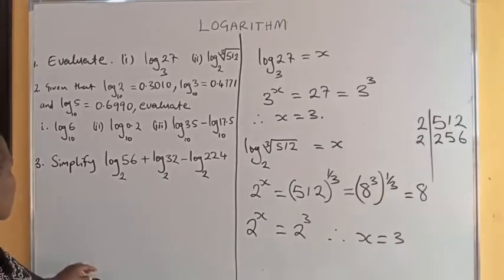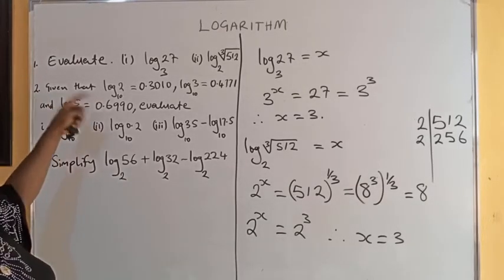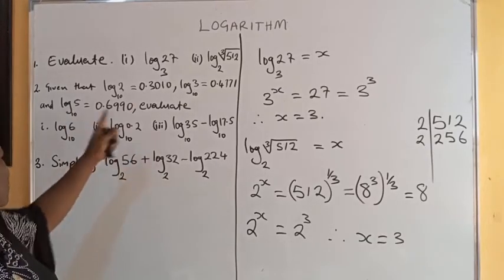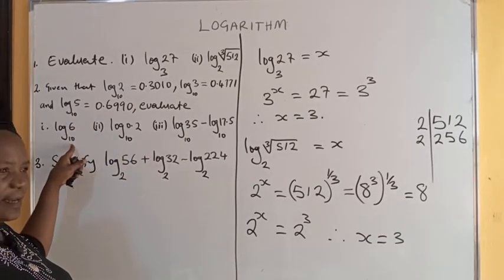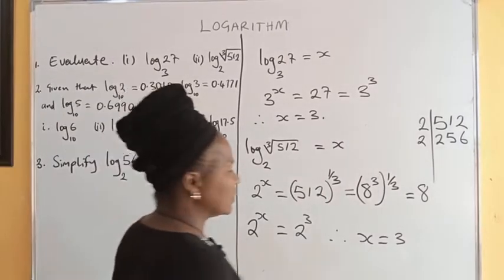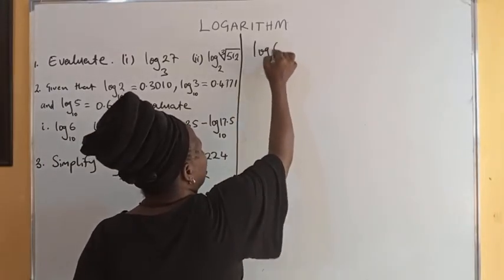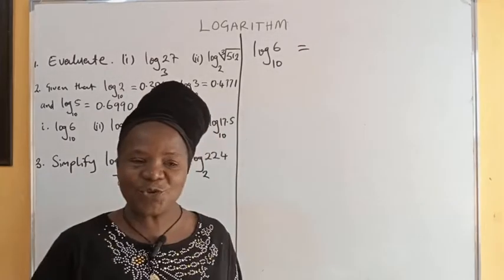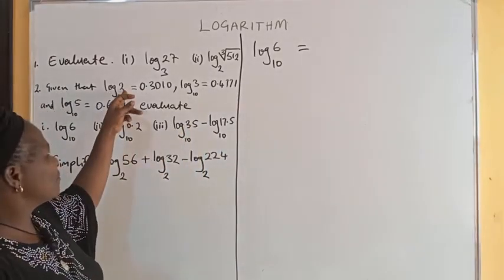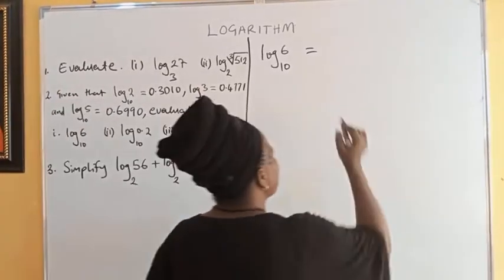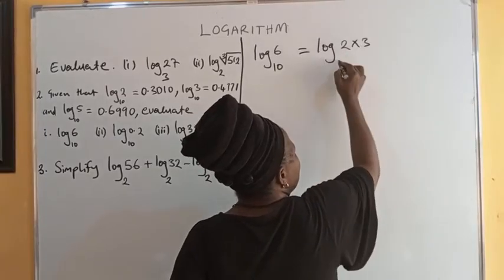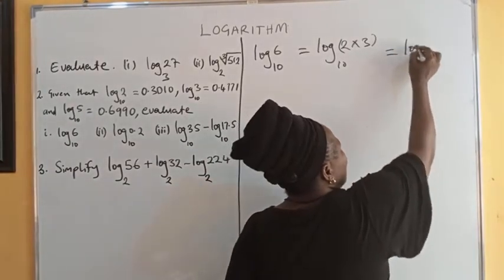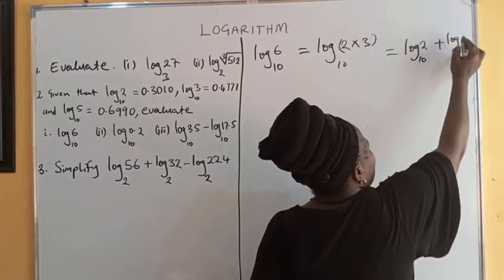Now look at the second problem. Given that log 2 in base 10, log 3, and log 5 are given values, evaluate log 6 in base 10. Now log 6 in base 10: since 6 is 2 times 3, and the values of log 2 and log 3 are given, we apply the logarithm law: log 6 in base 10 equals log 2 in base 10 plus log 3 in base 10.